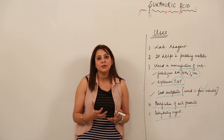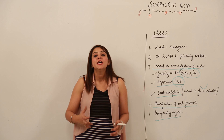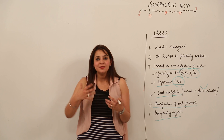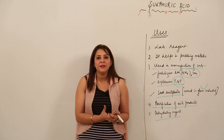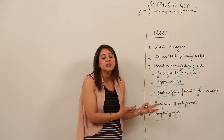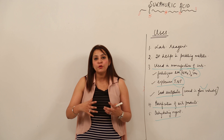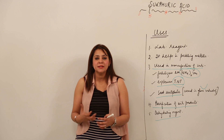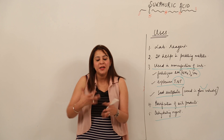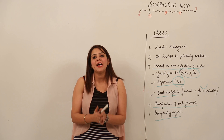So these are all the uses of sulfuric acid. You can conclude that sulfuric acid is called the king of chemicals because it has distinguishable properties, distinguishable uses, and it helps in forming other substances and chemicals in chemistry.